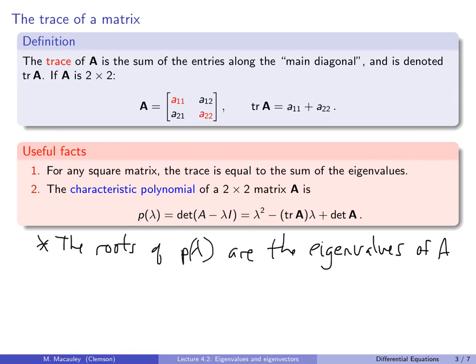By the way, 'eigen' in German means 'self.' So an eigenvalue corresponds to when A times V equals Lambda times V — a vector is mapped to a scalar multiple of itself.